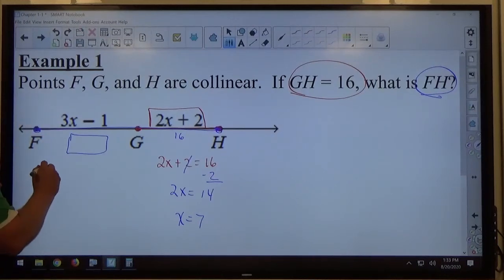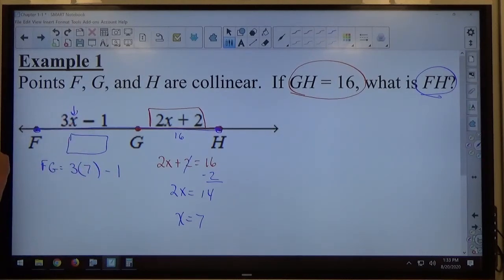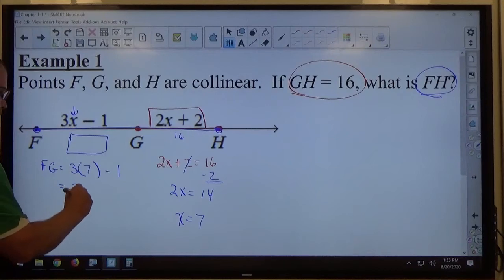Looking at FG, FG is going to equal 3 times 7 minus 1, because X equals 7. So FG is going to be 21 minus 1, which equals 20.